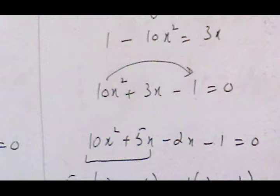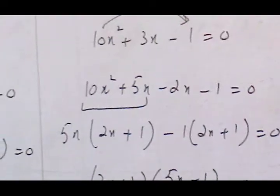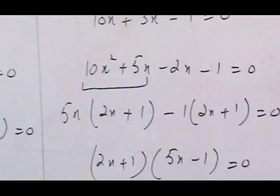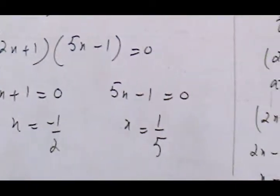This gives x² plus 3x minus 10. When we factorize, we multiply the first and last terms: 10 multiplied by minus 1. Factors of minus 10 are 5 and minus 2, which sum to plus 3 and multiply to minus 10. We factor and this gives the solution set.